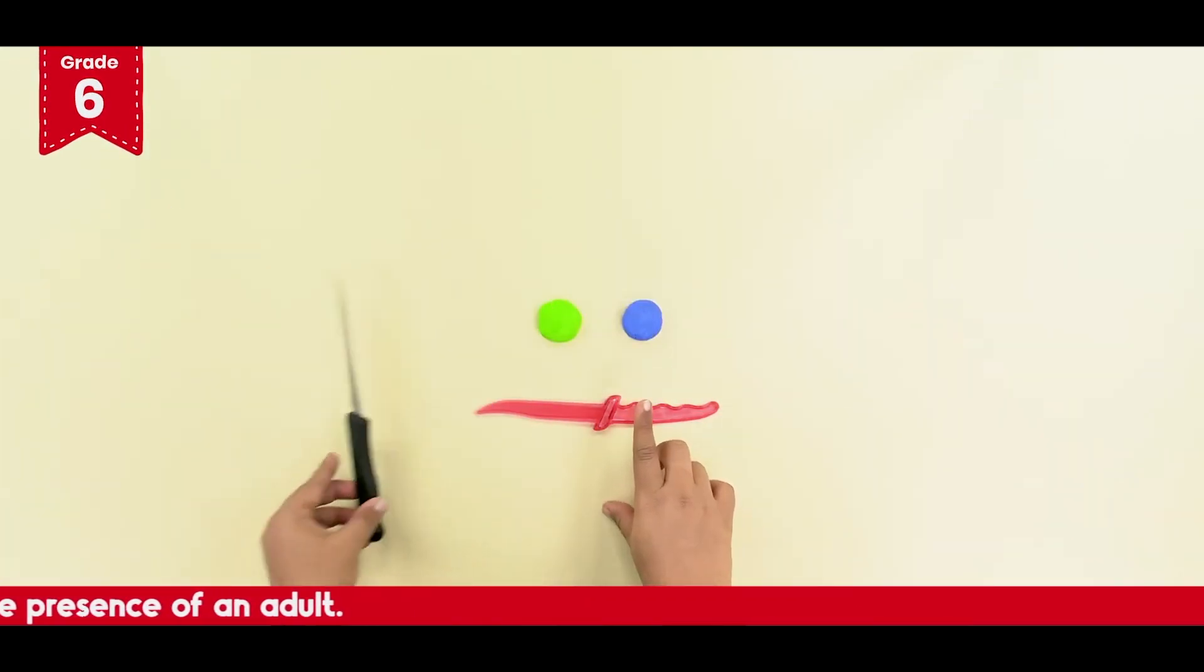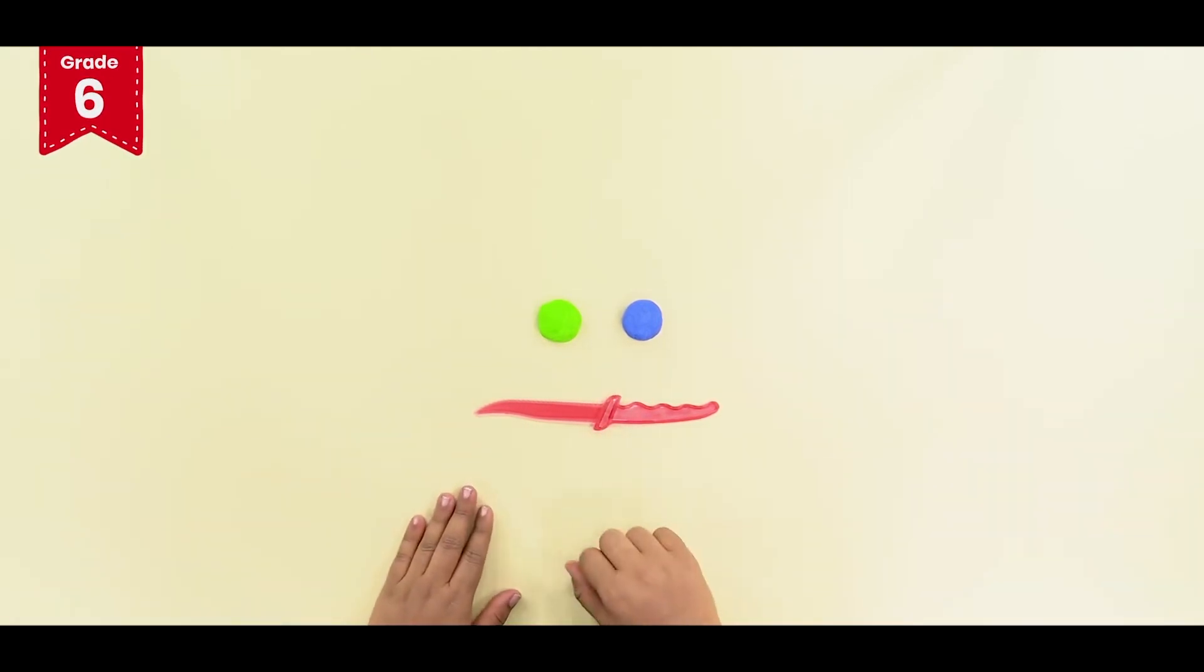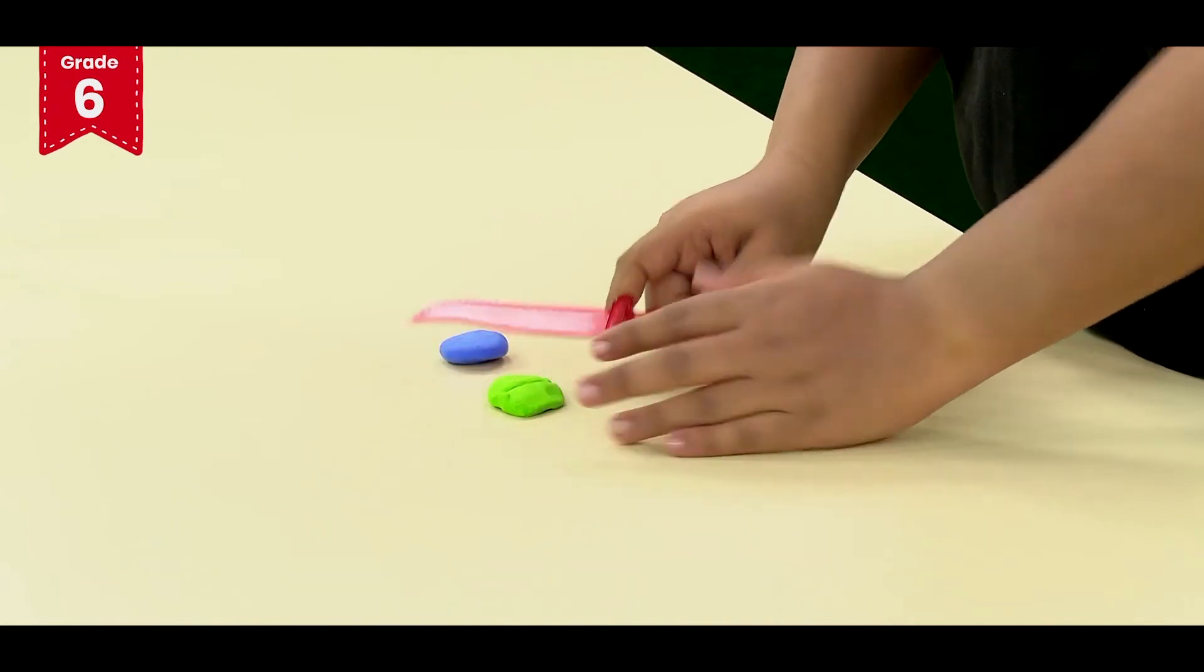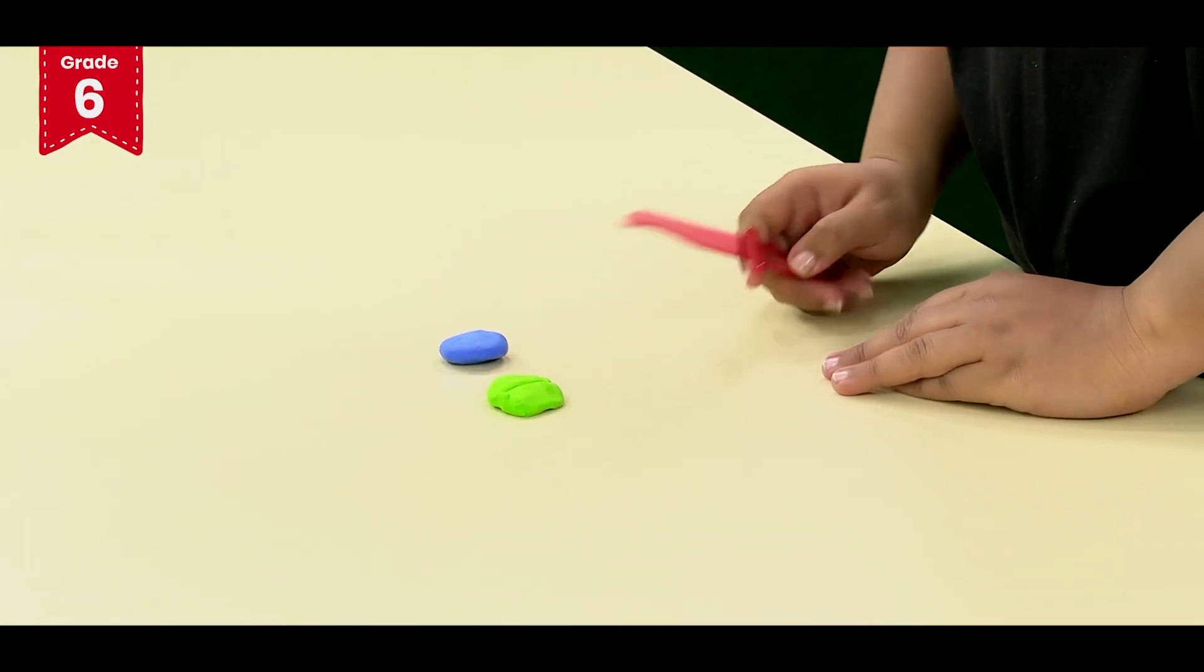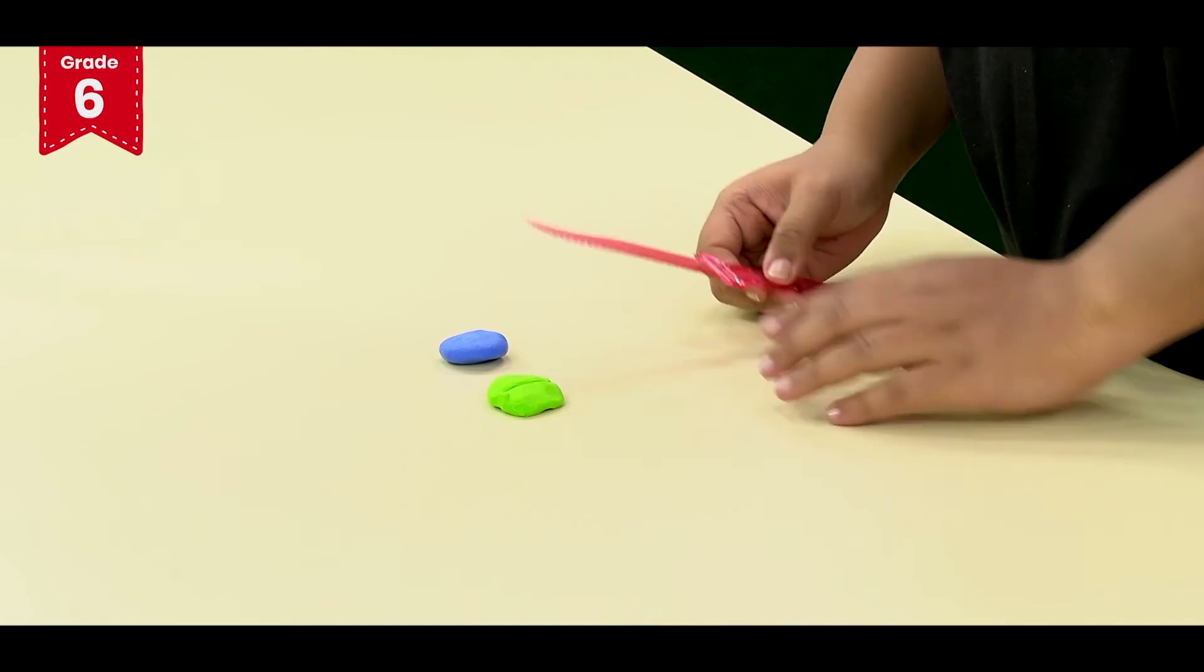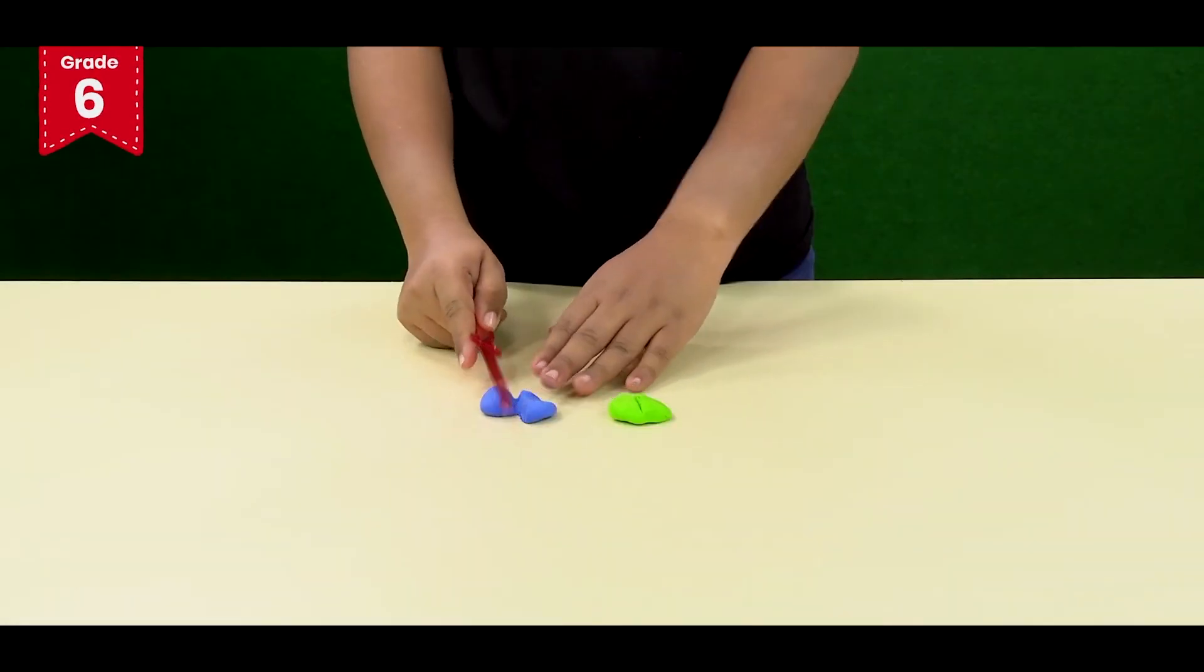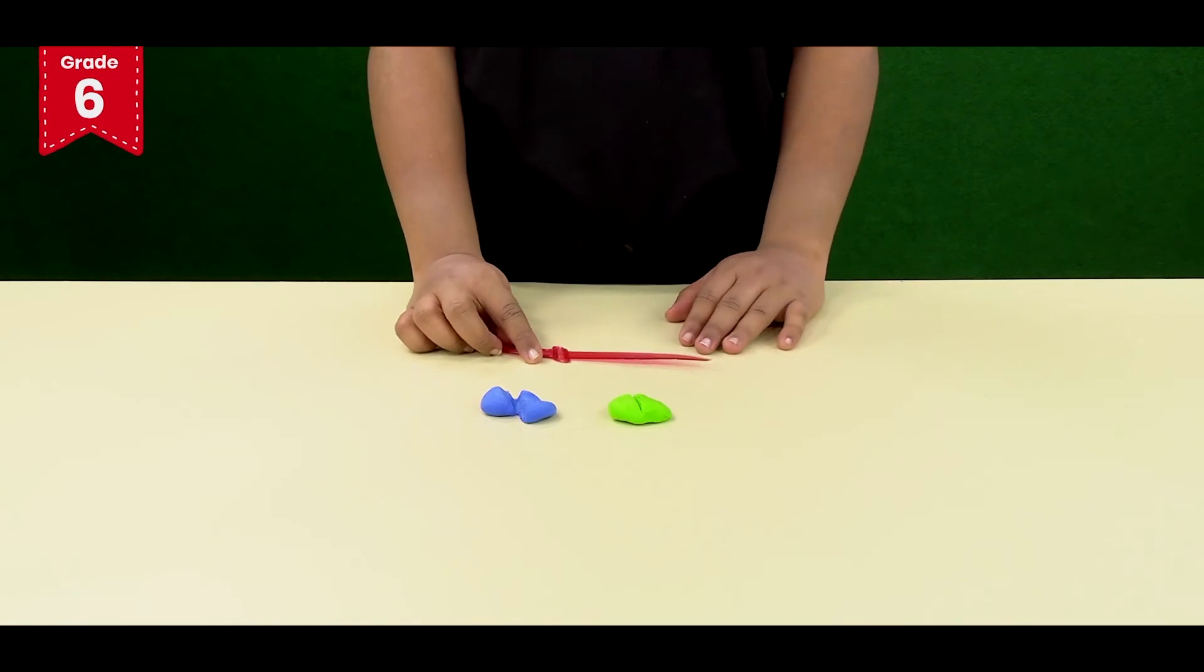Now let's try to cut the two clay cakes that we have prepared using this knife. First, let's use the blunt edge of the knife. Can you feel that you are facing difficulty while cutting? Now let's use the sharp edge of the knife. Oh, it was very easy to cut, right?